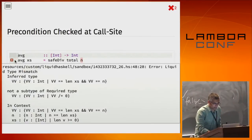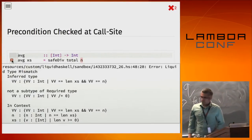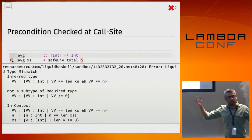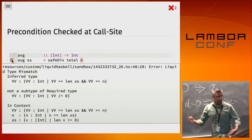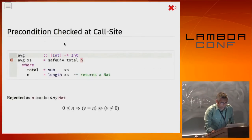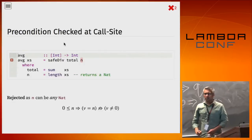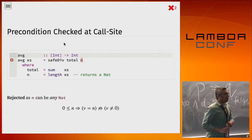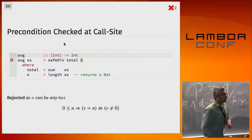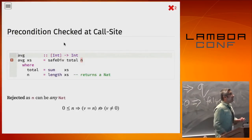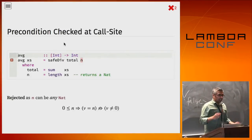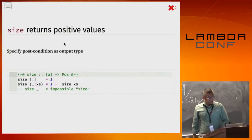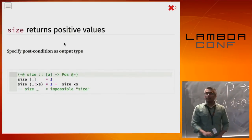But this is slightly sketchy — we might still end up with a problem because of the impossible call. Really what I want is some way of saying 'trust me, I will call average only with lists that are not empty.' If I can call average with non-empty lists, I can call size and be guaranteed that horrible thing won't happen.